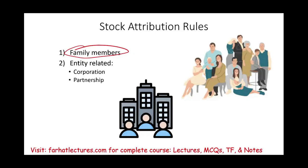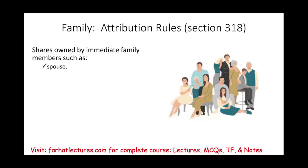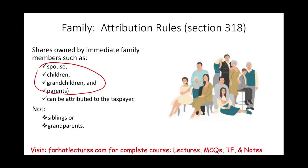You can also be connected through an entity-related relationship — through a corporation or through a partnership. Starting with the family: shares owned by immediate family members such as spouse, children, grandchildren, and parents can be attributed to the taxpayer. Although you are out, these individuals can bring you back in. Siblings or grandparents, however, are not included — if they own shares, you are not connected to them.